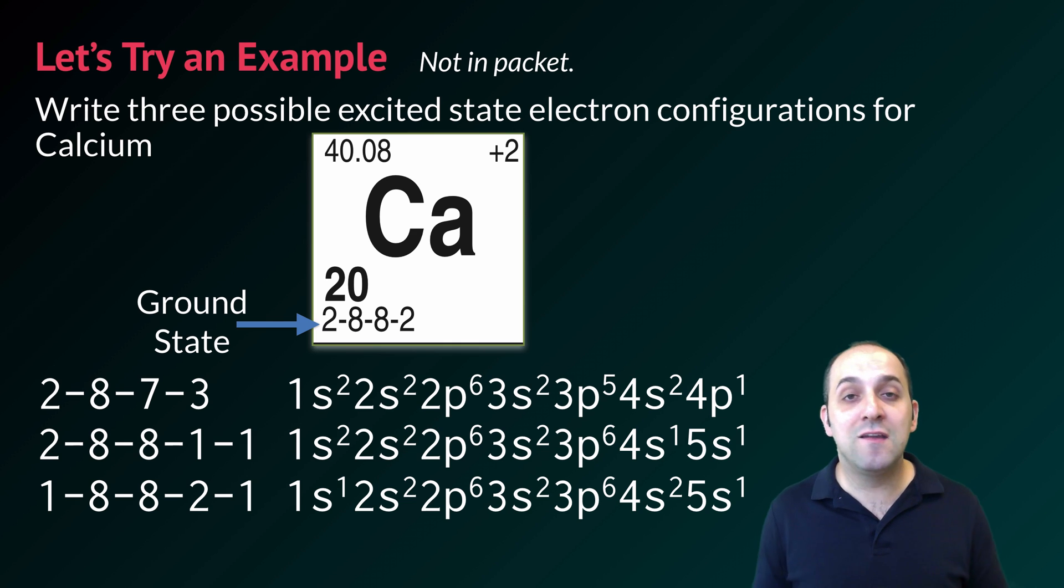A good test to see if a particular configuration is excited or ground state is to count up the total number of electrons in the configuration and compare it to the configuration for the atom on the periodic table that has the same atomic number as that total number of electrons. If it looks the same, it's in the ground state. If it doesn't, then we know that that atom's electron configuration is in the excited state.